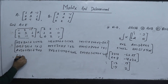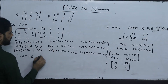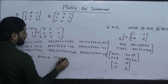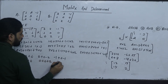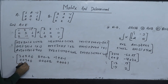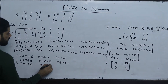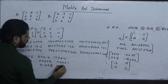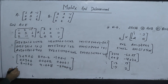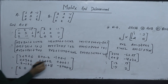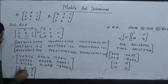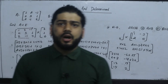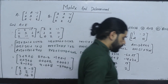Results: 3 plus 2 plus 0 gives 5. 2 plus 0 minus 2 gives 0. Minus 1 plus 0 minus 1 gives minus 2. Then 0 plus 3 plus 0 gives 3. 0 plus 0 plus 2 gives 2. 0 plus 0 plus 1 gives 1. Then 6 minus 1 plus 0 gives 5. 4 plus 0 plus 8 gives 12. Minus 2 plus 0 plus 4 gives 2.